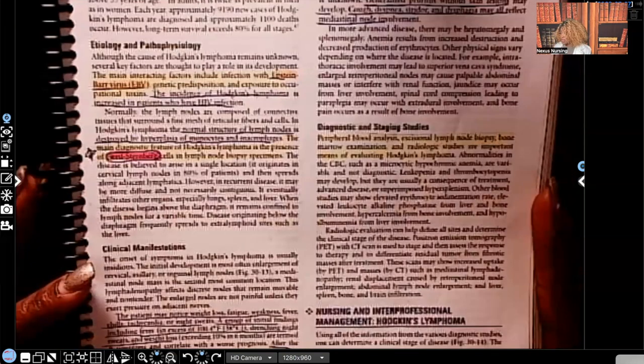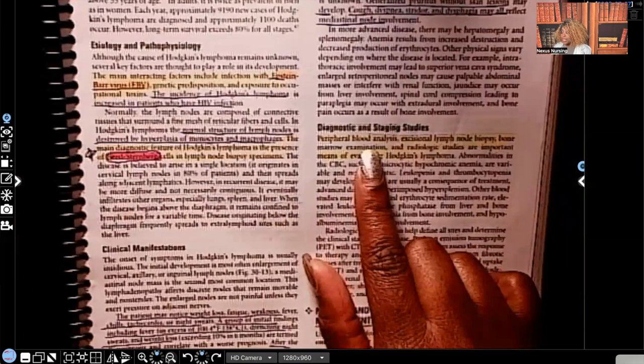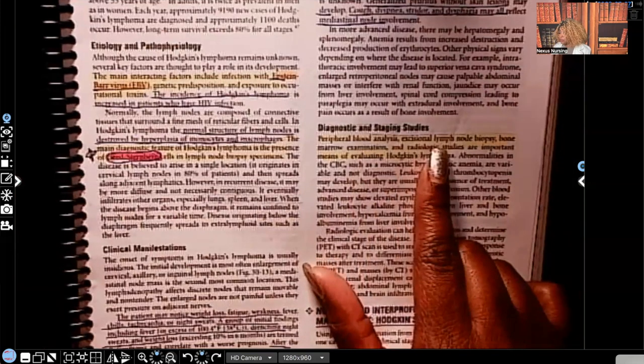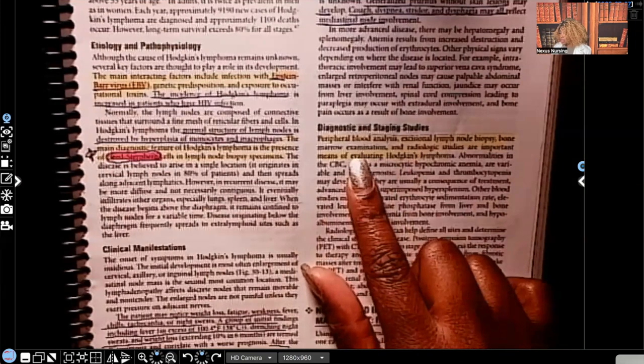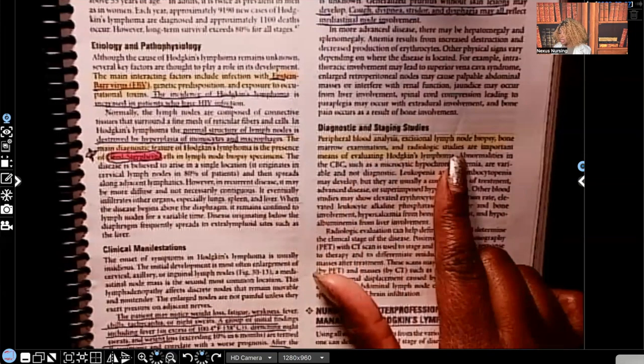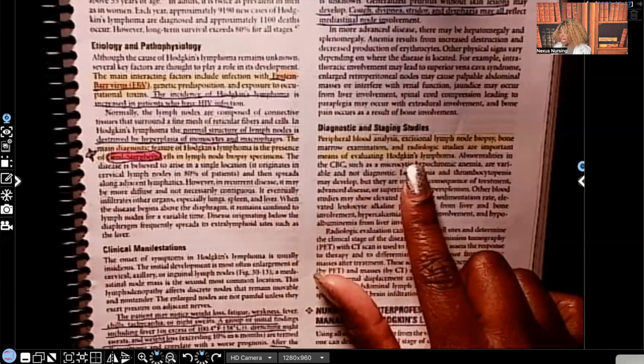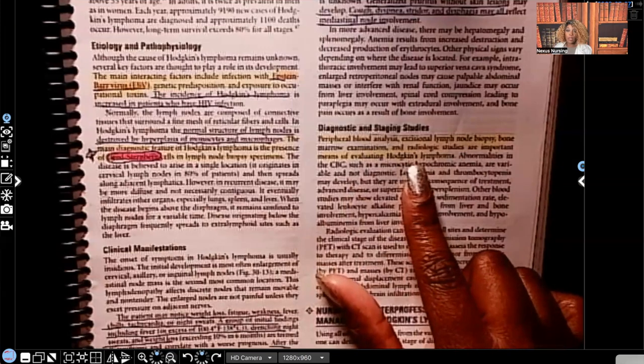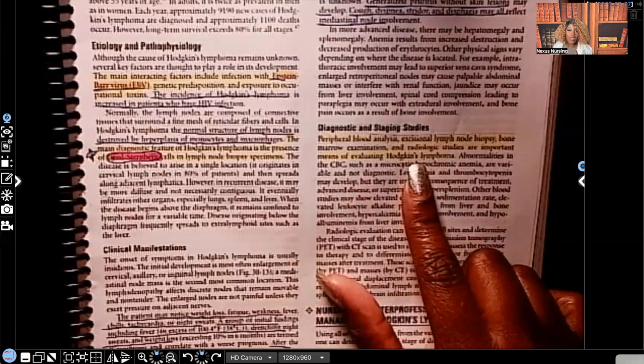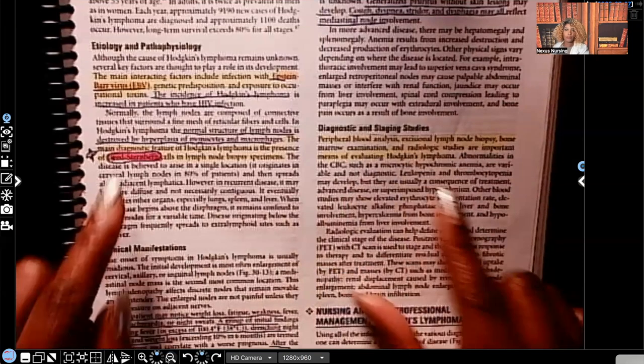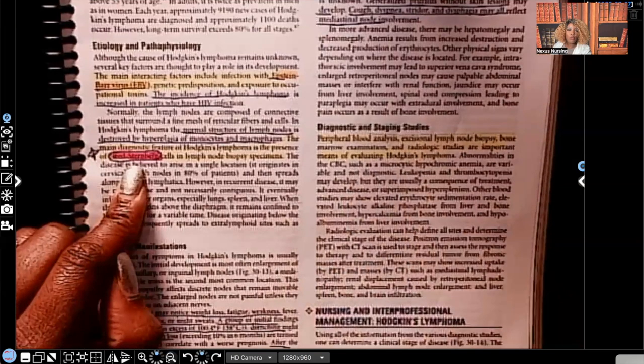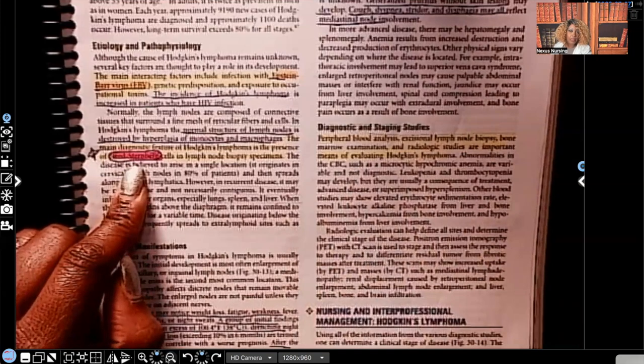Diagnostic and staging studies, peripheral blood analysis, excisional lymph node biopsy, bone marrow examination, and radiologic studies are important means of evaluating Hodgkin's lymphoma. But at the end of the day, what diagnoses it? Right here. The Reed-Sternberg cells that are found in that lymph node biopsy.